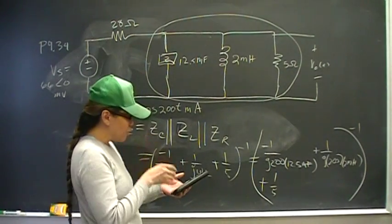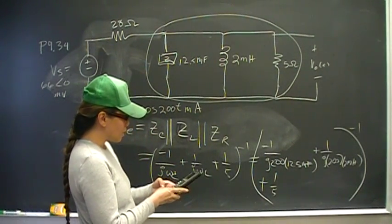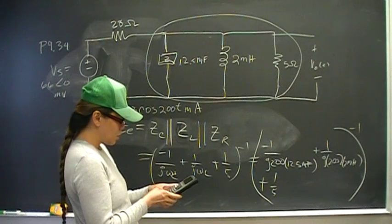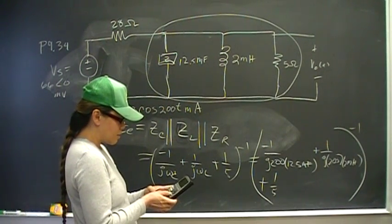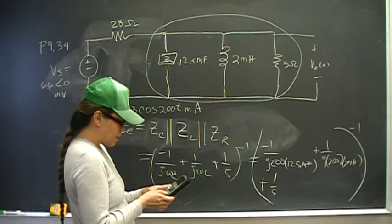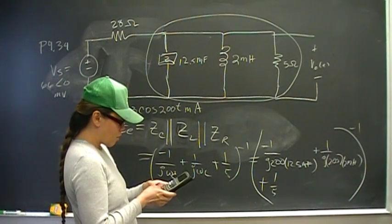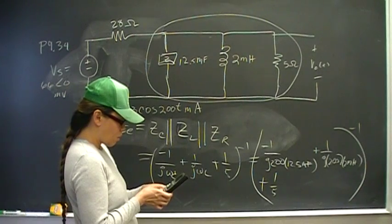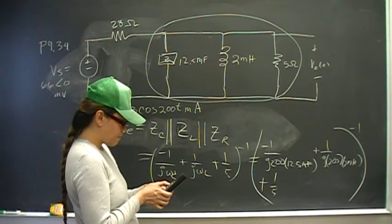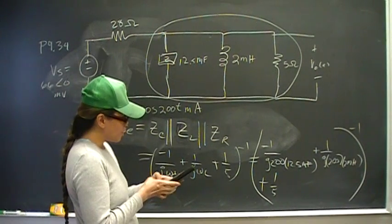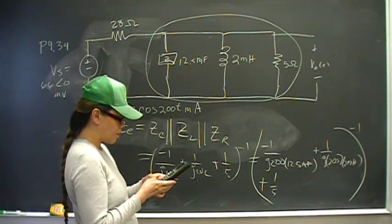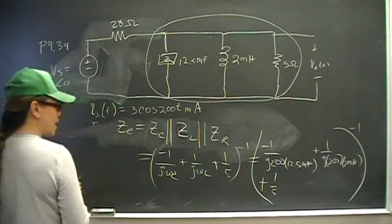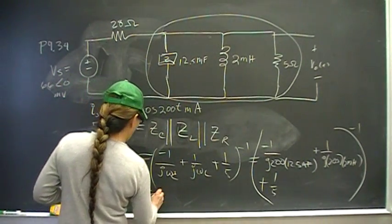So here I go: 1 divided by - and on the TI-89 you don't have a j, of course. No calculators do. They use j for a convention, but in circuits we use j. So on your TI-89 you put i, the imaginary symbol, times 200 times 12.5 times 10 raised to the negative 3rd, plus 1 over i. 1 divided by quantity i times 200 times 2 times 10 raised to the negative 3, plus 1 divided by 5. Enter, raise that to the negative 1st power, and you get an answer of 5 ohms.